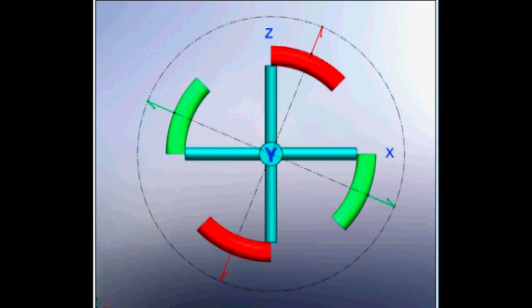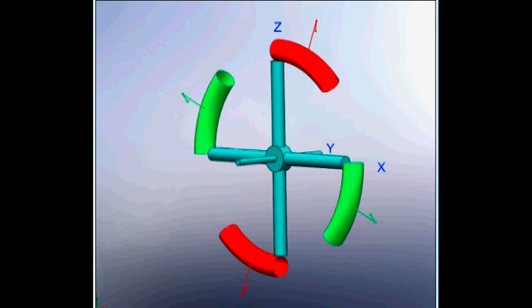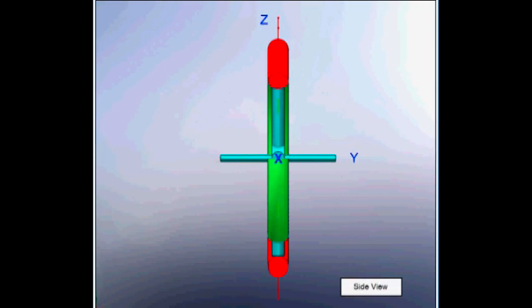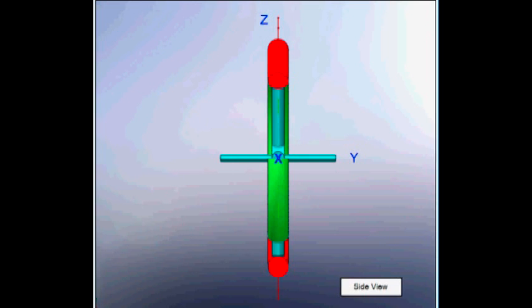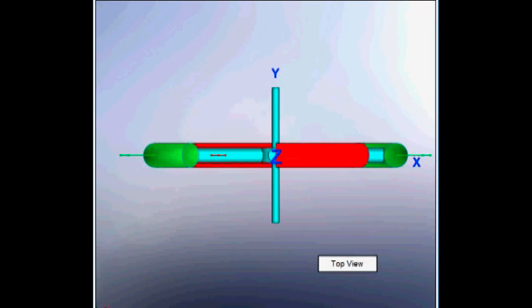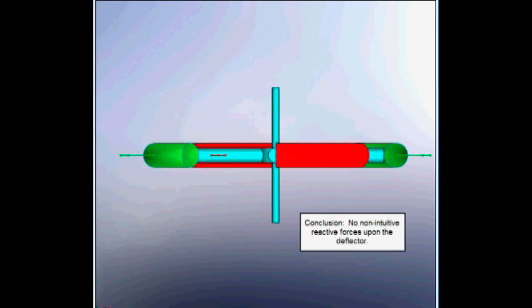So we shouldn't expect any sum forces on the deflector. We can spin the deflector around looking at the side view and we can see that the forces are in the plane of the deflector so there shouldn't be any torques in any other plane as well as we can see from the top view. So conclusion: no non-intuitive reactive forces upon the deflector.